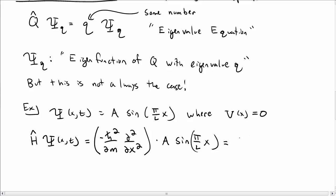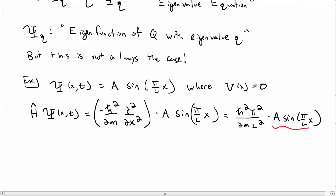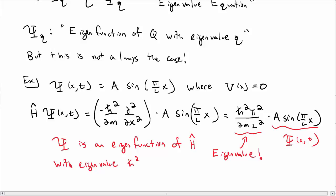The Hamiltonian operator h hat times psi gives minus h bar squared over 2m, partial partial x squared, times a times sine of pi over l x. We take those derivatives, and out front we get h bar squared pi squared over 2m l squared, times a sine of pi x over l again. So notice that this is our original wave function back again times some number here, and that number is the eigenvalue. So we say capital psi here is an eigenfunction of the Hamiltonian operator h hat with an eigenvalue h bar squared pi squared over 2m l squared.